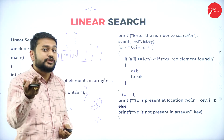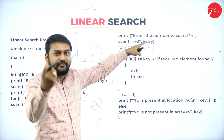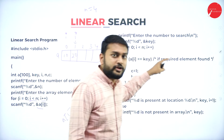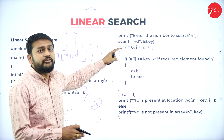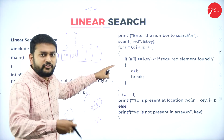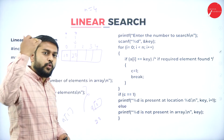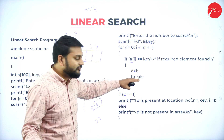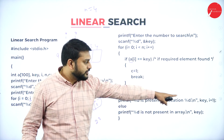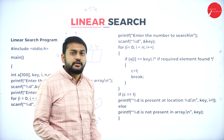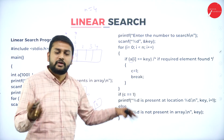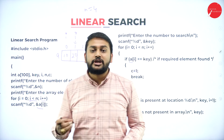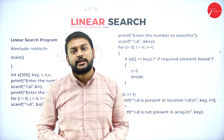Then I ask: which element do you want to search? I read the key value from the user. Another for loop runs n times — same as the algorithm — and checks if e[i] equals key. If a match is found, I set the flag c to 1 and break out. After the loop, if c equals 1, I print 'element found at location i+1'; otherwise 'element not found'. This is how linear search is implemented. Thank you, bye-bye.